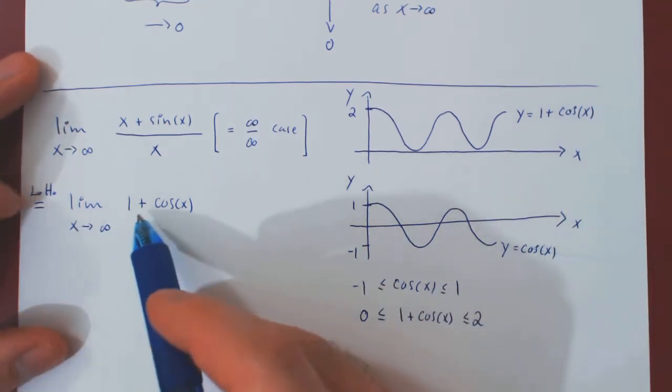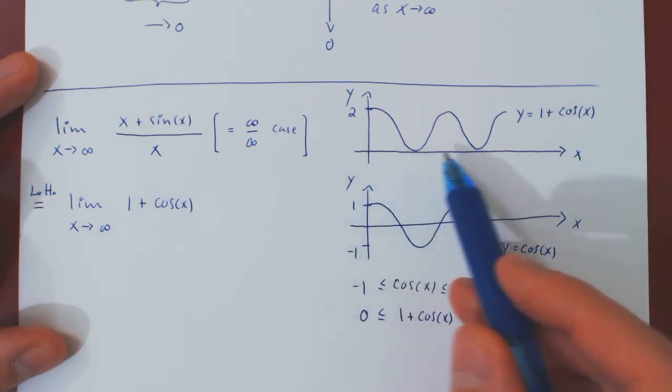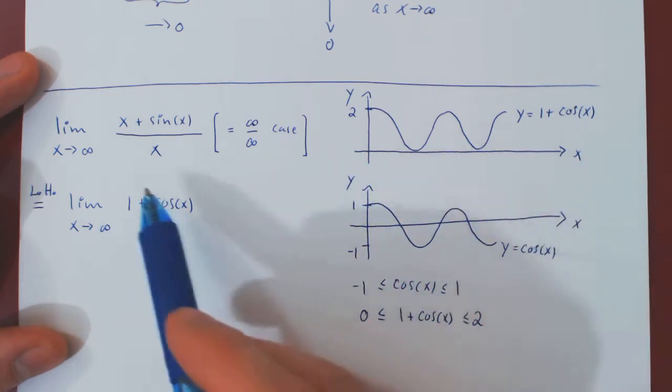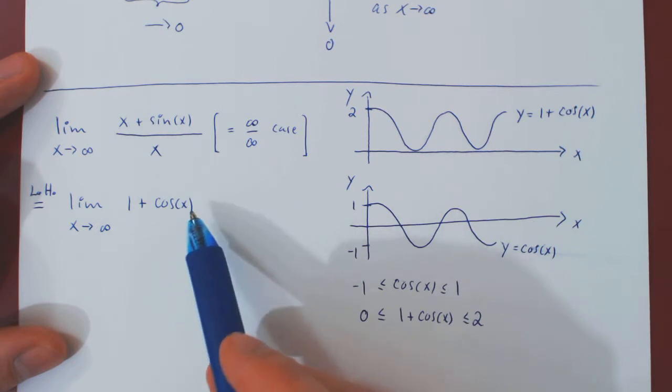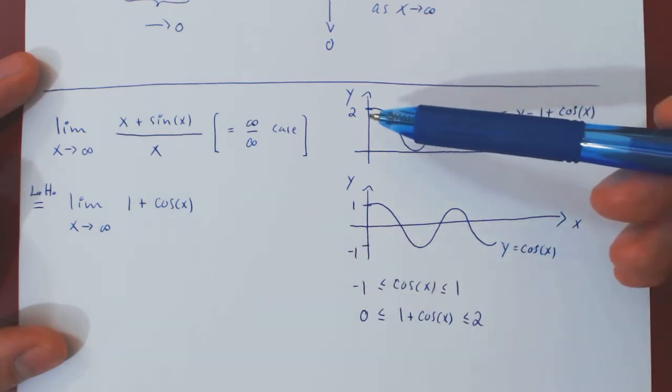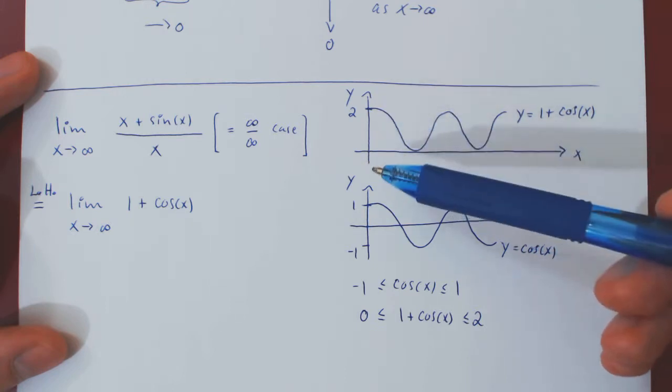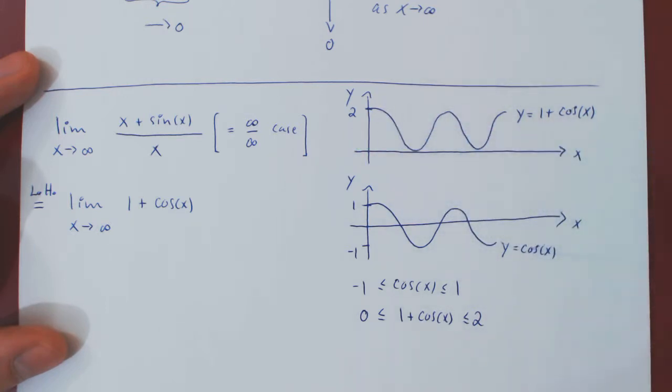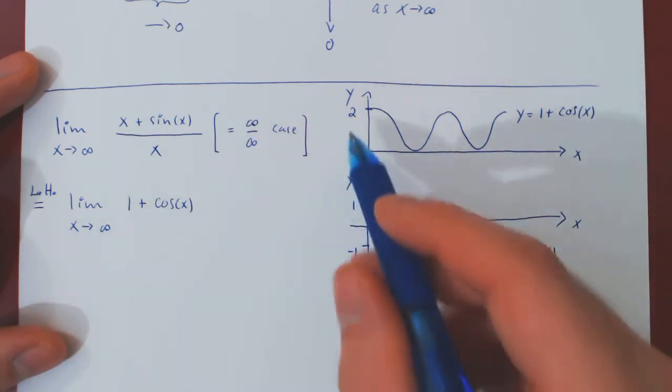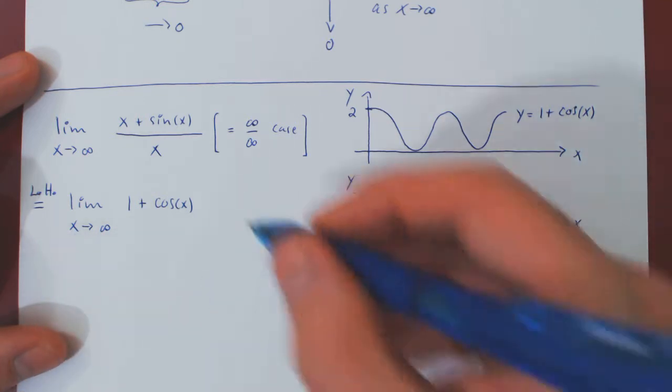So, now think of this. We're asking here, as x approaches infinity, so as x gets larger and larger and larger, will 1 plus cos of x be approaching a unique y value? And the answer is clearly no. No matter how large x is, 1 plus cos of x will oscillate forever between 0 and 2. So, it is not approaching a unique y value in the limit. So, all we can say here, because of this never-ending oscillation, is the limit simply does not exist.